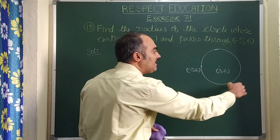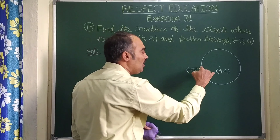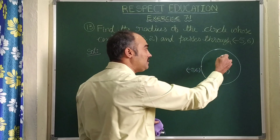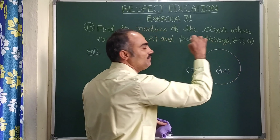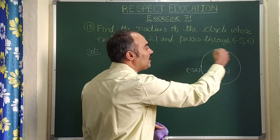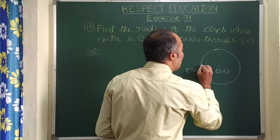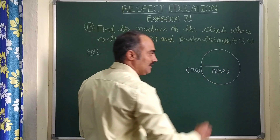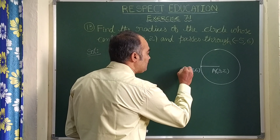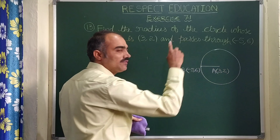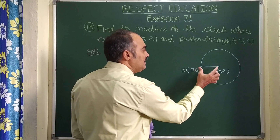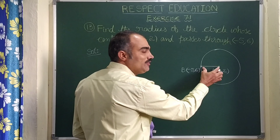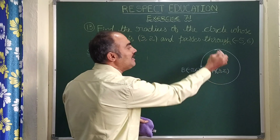The point (-5, 6) can be taken anywhere on the circumference — it is not fixed to a particular side. What matters is that this point must lie on the circumference of the circle. Let us join these two points: A(3, 2) is the center, B(-5, 6) is a point on the circumference, so the distance AB is nothing but the radius of the circle.